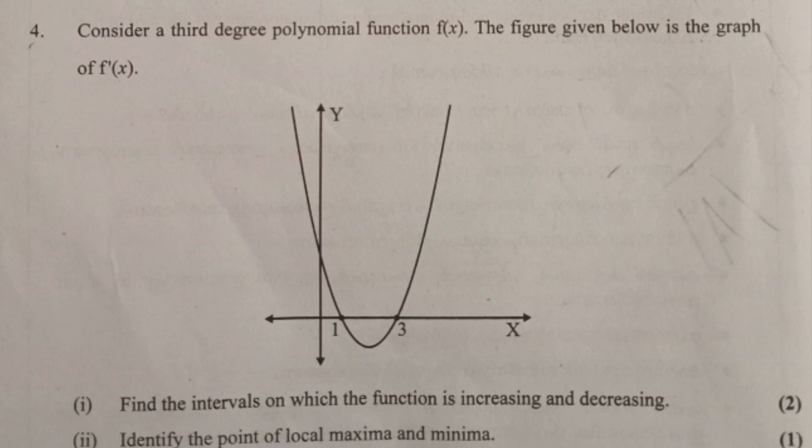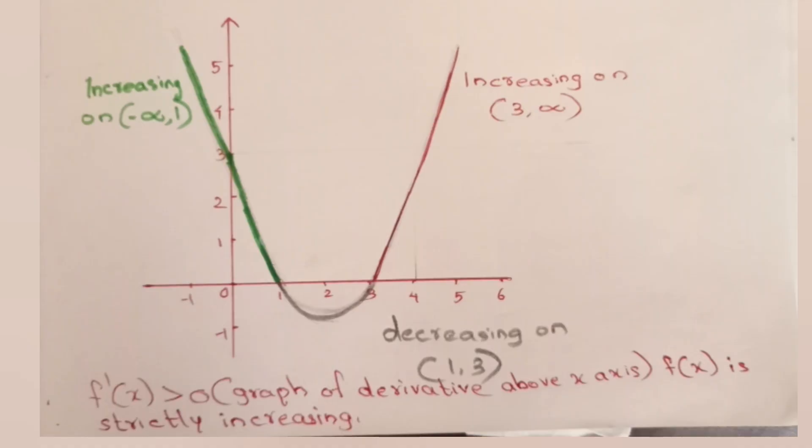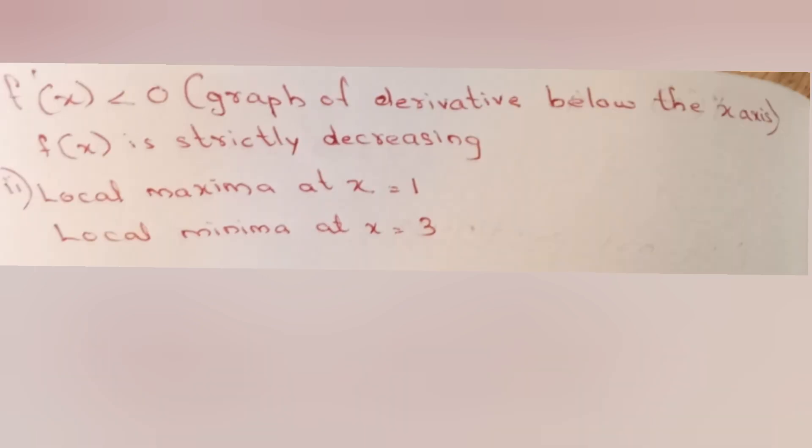Consider a third-degree polynomial function f(x). The graph given is of f′(x). Find the intervals on which the function is increasing and decreasing, and identify local maxima and minima. Answer: f′(x) > 0 means graph of derivative is above x-axis, so f(x) is strictly increasing. f′(x) < 0 means strictly decreasing. Local maxima at x = 1, local minima at x = 3.